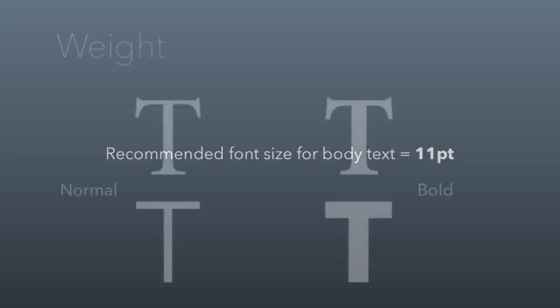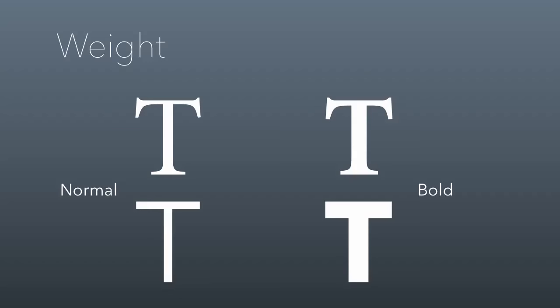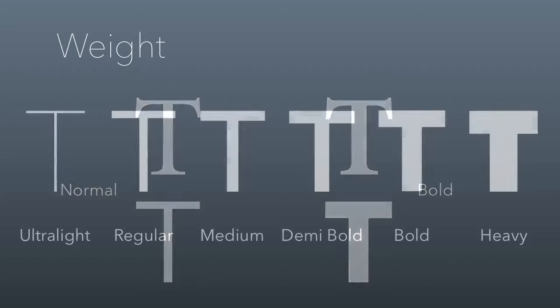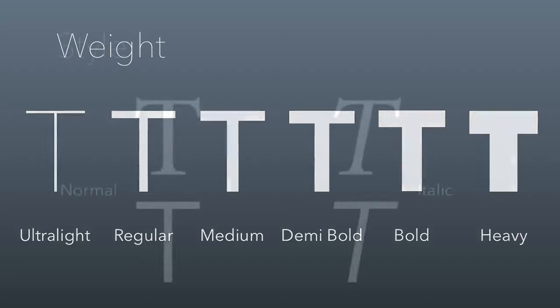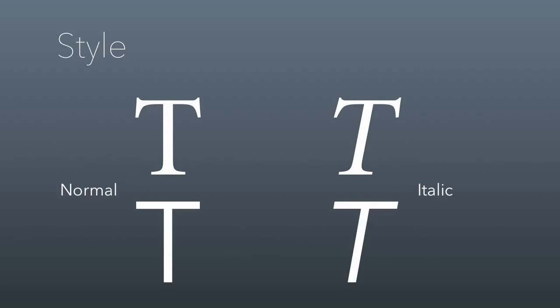Fonts also have a weight. Most people think of this as just the difference between a normal font and a bold font, but some well-designed fonts actually have an array of weights. A font I use in all my slides is called Avenir Next, which has six different weights, from ultralight — which I use in my titles — all the way up to heavy. Fonts also have different styles; the dominant difference in style is between normal and italic.